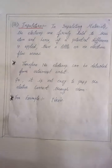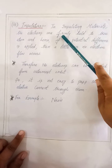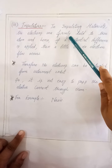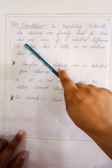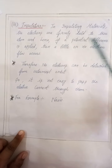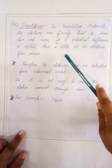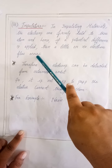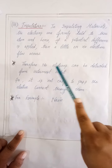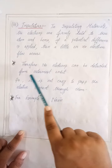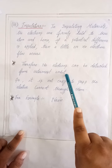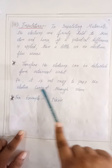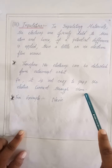The third type is insulators. In insulating materials, electrons are firmly held to their atom. If a potential difference is applied, little or no electron flow occurs. Therefore, no electrons can be detached from the outermost orbit, so it is not easy to pass electric current through them.